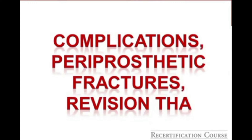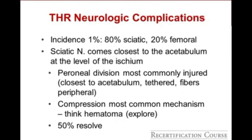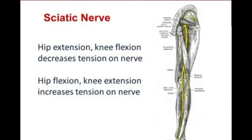Neurologic complications occur in about 1% of total hip arthroplasties and are predominantly sciatic nerve injuries. The sciatic nerve comes closest to the acetabulum at the level of the ischium, and the peroneal division is most commonly injured, which can lead to foot drop. If a patient had intact EHL function and loses it the night after surgery, that is an emergency — the patient needs to return to the operating room, likely for hematoma evacuation. 50% of neurologic complications resolve. Hip extension and knee flexion decrease tension on the nerve.